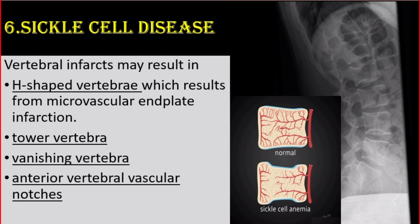Number 6: Sickle cell disease, in which there is vertebral infarction which results in H-shaped vertebrae from microvascular endplate infarction, tower vertebra, vanishing vertebra, and anterior vertebral vascular notches.